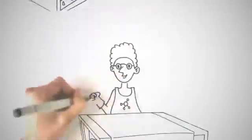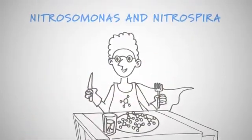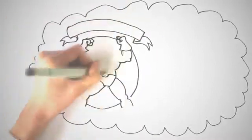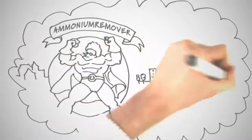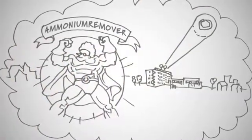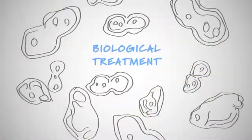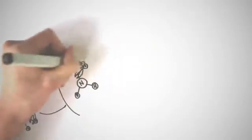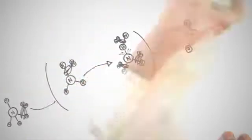We use bacteria to remove the ammonium. These so-called ammonium removers are good bacteria that eat up ammonium. In this way they help purify the groundwater, a process which we call biological treatment. The ammonium removers deal with the ammonium by turning it into nitrate. This takes away the disadvantages of ammonium.